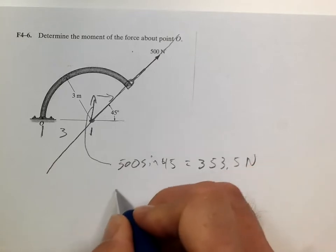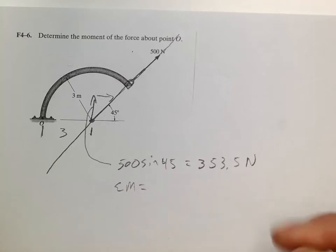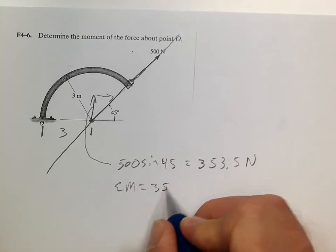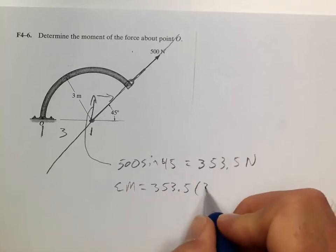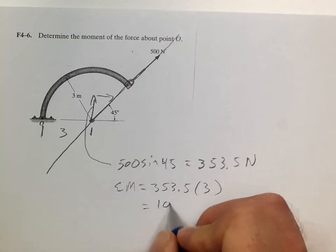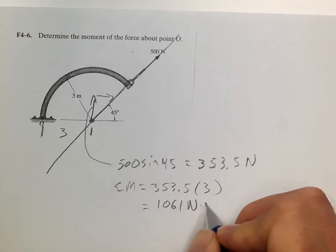And so if we sum the moments, we get 353.5 times 3, which is 1061 newton meters.